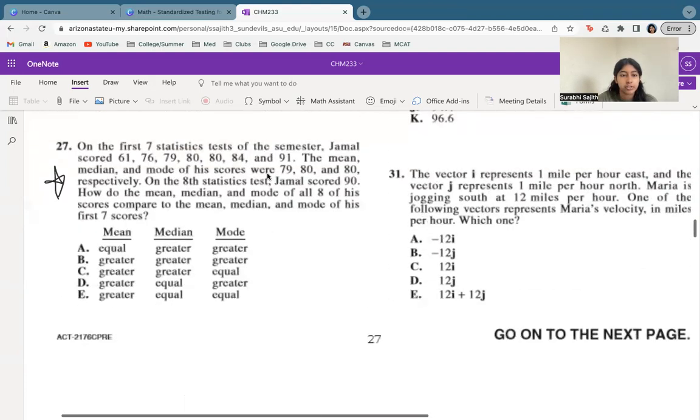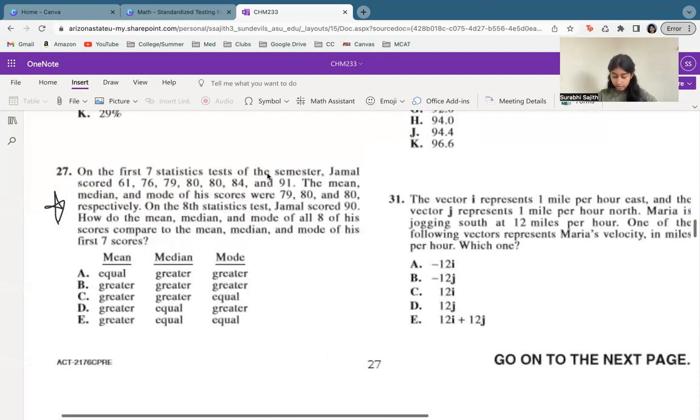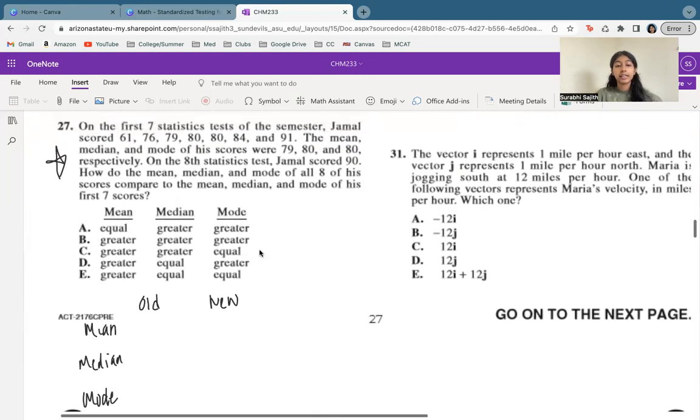All right, and we're going to jump down here. We're going to do a little bit of statistics. So Jamal scored 61, 76, 79, 80, 80, 84, 91. On his eighth test, we're going to compare his old stats to his new stats. So let's make a little table ourselves. We've got old, new. We're going to do mean, median, and mode. All right, so your mean is your average, and you get your mean by adding up all your scores and dividing by the total number of scores you have.